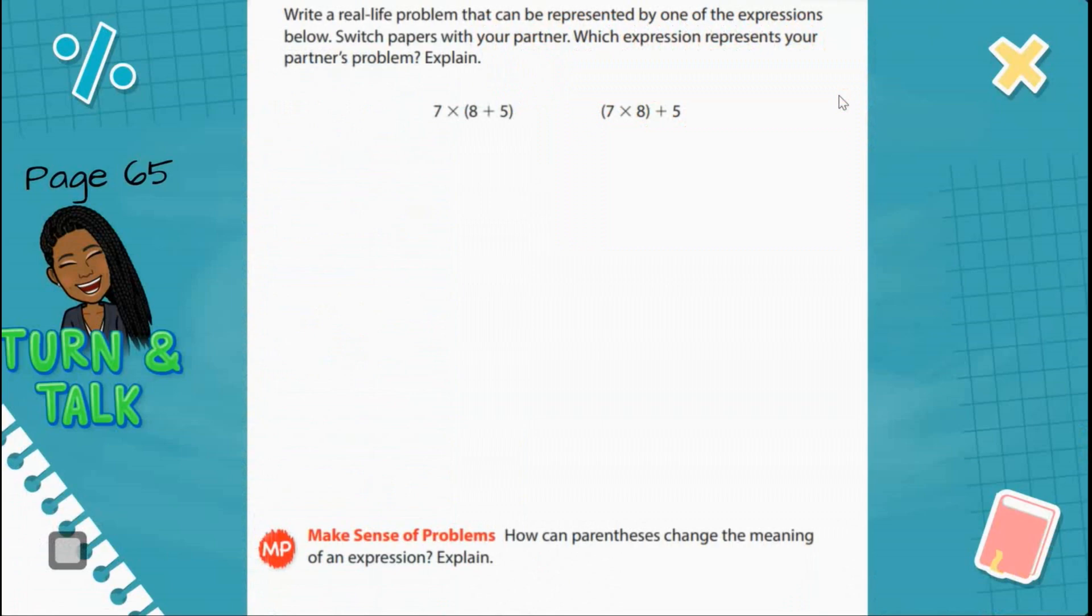Let's turn to page 65 in your Big Ideas textbook. I want you to turn and talk to your partner and discuss this problem. Write a real-life problem that can be represented by one of the expressions below. You will then switch papers with your partner, which expression represents your partner's problem, and then explain. Pause the video if you're working by yourself and press play when you're ready to continue.